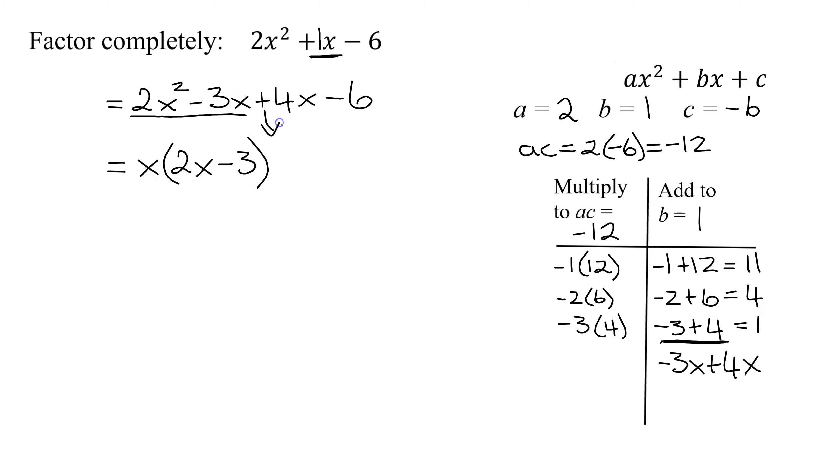Bring down the middle sign. What do the last two have in common? Just a 2. Factor a 2 out of 4x, it's going to leave 2x. Factor a 2 out of negative 6, it's going to leave negative 3.